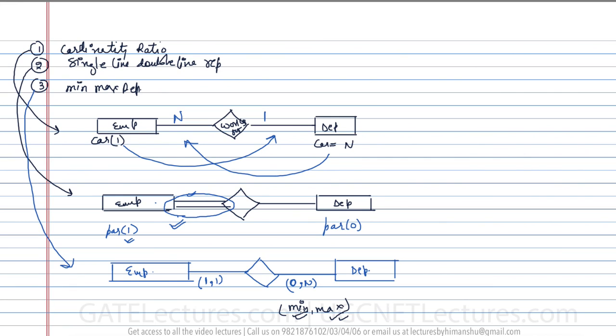Now let us look at the different kinds of relationships: one-to-one relationship, one-to-many relationship, many-to-one, and so on.